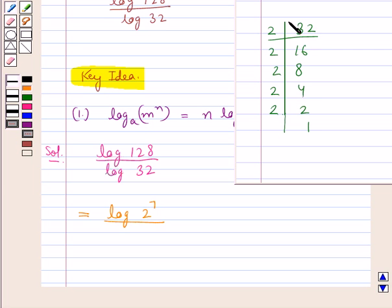And on factorizing 32, we get 32 equal to 2 to the power of 5. So this would be log of 2 to the power of 5.